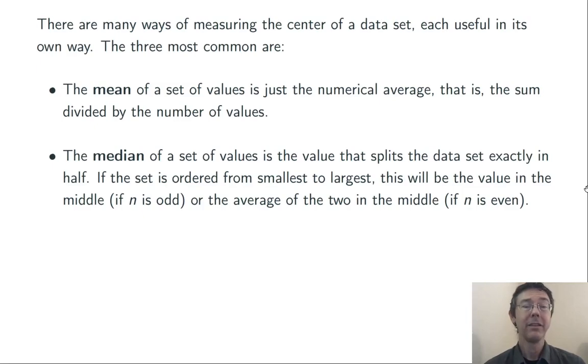The median is the value that splits the data exactly in half. In particular, you should arrange your data from lowest to highest. If you have an odd number of values, the median is exactly the one in the middle. If there's an even number of values, so you have two values in the middle, you should split their difference. Take their average, go halfway between them.